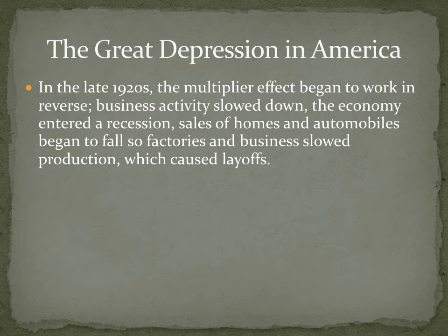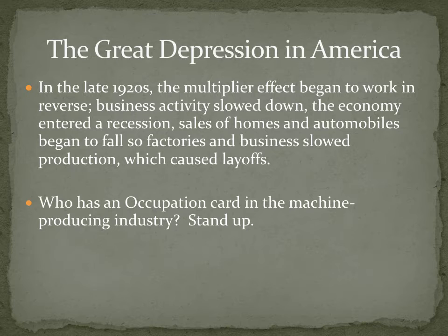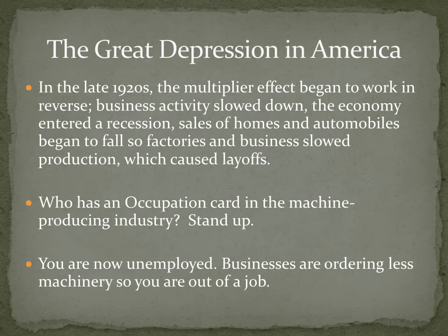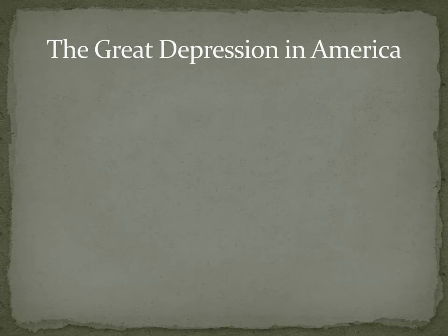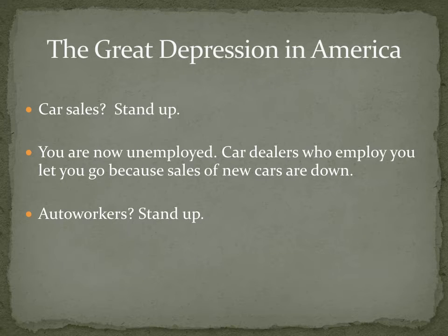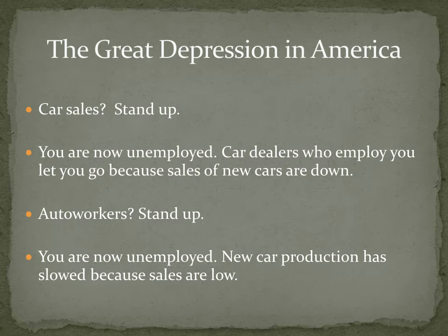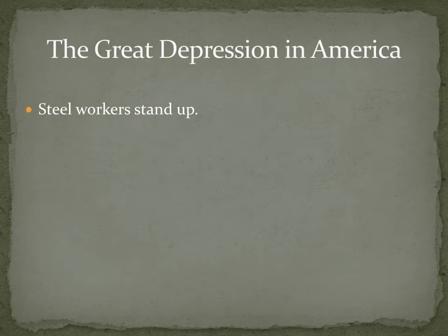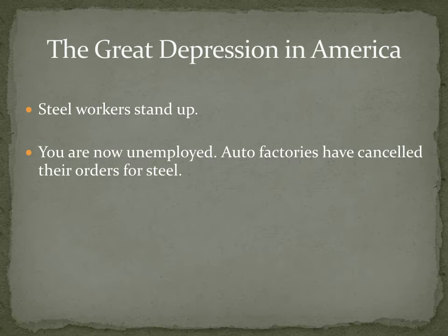Imagine that I had given you each an occupation card. Machine-producing industry — you are now unemployed; businesses are ordering less machinery, so you're out of a job. If you were in car sales, you are now unemployed; car dealers let you go because sales of new cars are down. Auto workers — you're now unemployed; new car production has slowed because sales are too low. Steel workers — if we're not making any cars, we don't need steel, so you don't have a job.